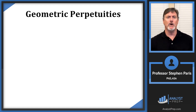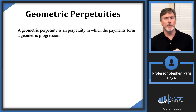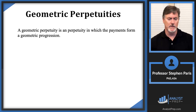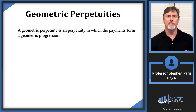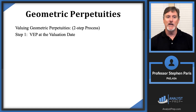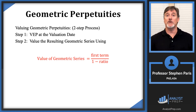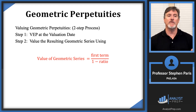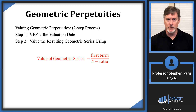Finally, let's briefly cover geometric perpetuities — a perpetuity where payments form a geometric progression going on forever. These are actually easier to value than geometric annuities; there's just a two-step process. Step one: value each payment at the valuation date. Step two: value the resulting infinite geometric series using the formula: first term divided by (1 minus the ratio). Apply that process and you'll get the answer every time.